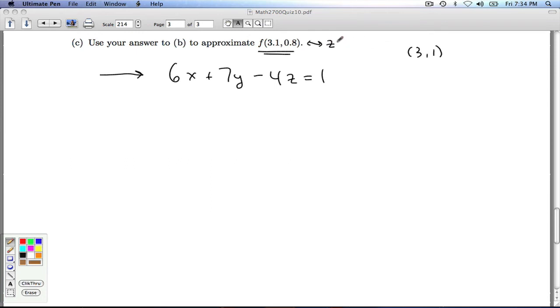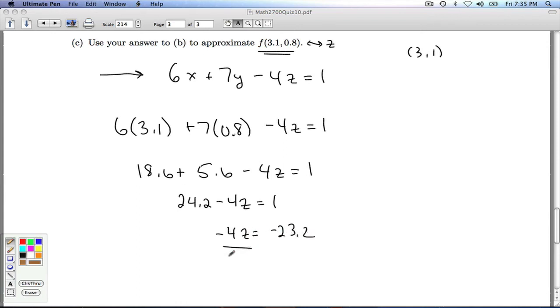So we're going to approximate the z value on the surface with the z value on the tangent plane. So what I need to do is plug x and y into this equation. So I'll go ahead and do that. So I'm going to plug in 3.1 for x and 0.8 for y. And I'm going to solve for z on the tangent plane. So this is 18.6. This is 5.6. So that's going to be 18 and 5 is 23. So this is 24.2. So negative 4z is negative 23.2.